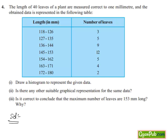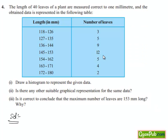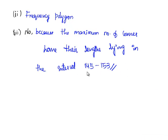Now let's move on to the question. Is it correct to conclude that the maximum number of leaves are 153 mm long? Why? As if we see here the maximum number of leaves are in between the interval 145 to 153. No, because the maximum number of leaves have their lengths lying in the interval 145 to 153.